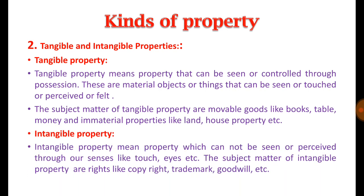Intangible property means the property which cannot be seen, cannot be touched, and the existence of which cannot be perceived by our senses like touch or sight. We must understand them in terms of rights recognized by the legal system. The subject matter of intangible property includes copyrights, trademarks, goodwill, reputation, easement rights, and other similar rights.